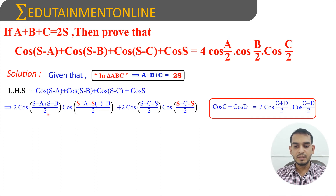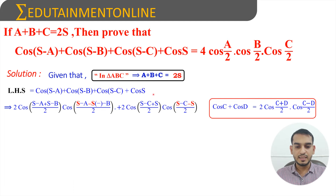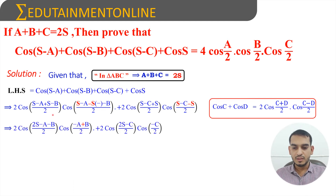So we get 2·cos((2s - a - b)/2)·cos((b - a)/2), and the last two terms become 2·cos((s - c + s)/2)·cos((s - c - s)/2), which simplifies to 2·cos((2s - c)/2)·cos(-c/2).